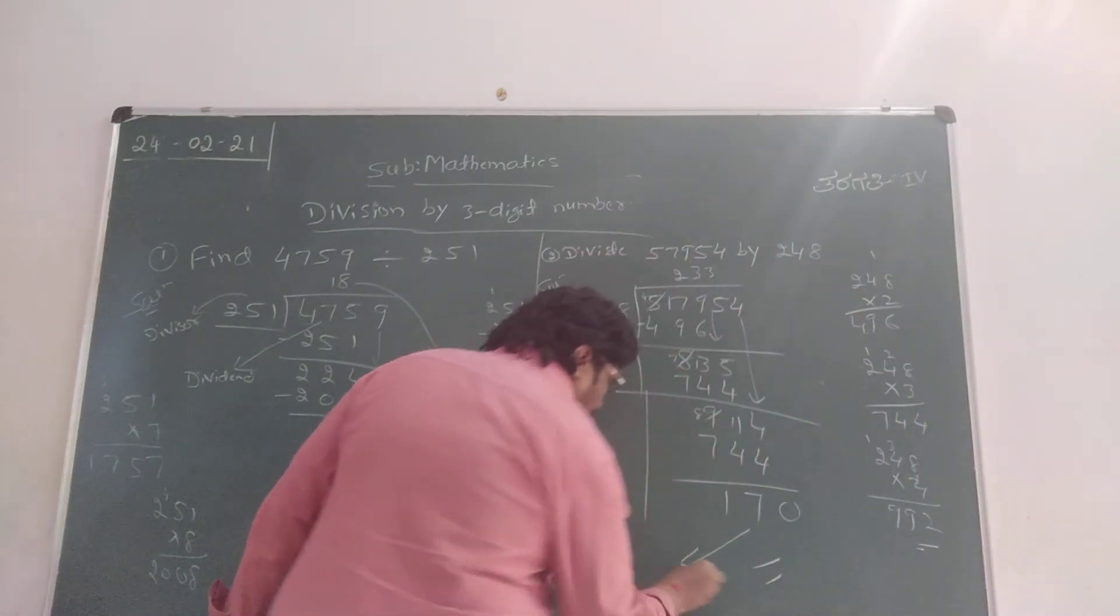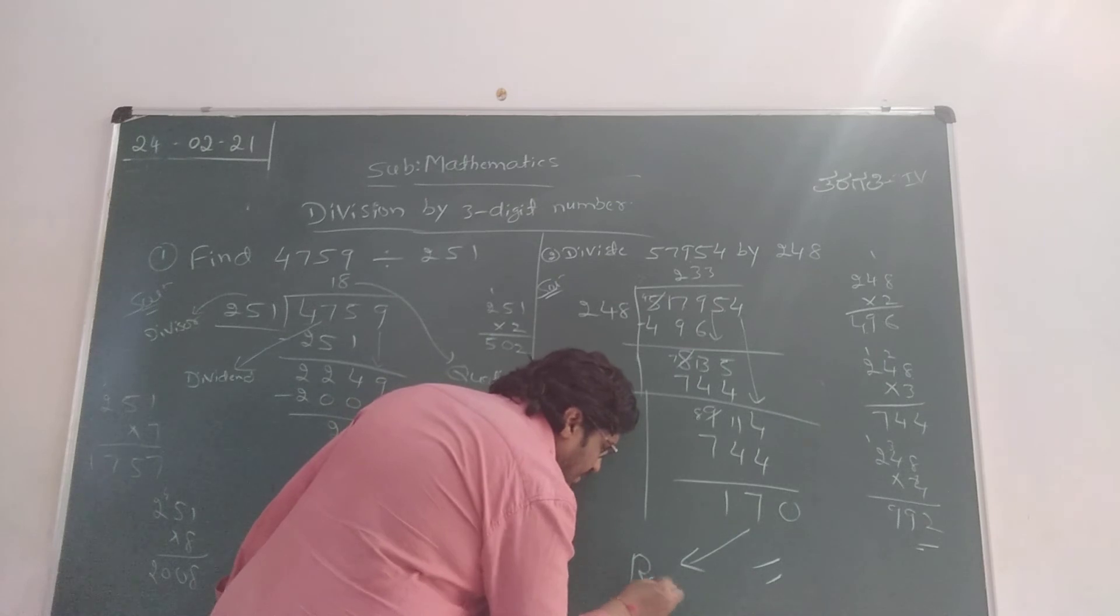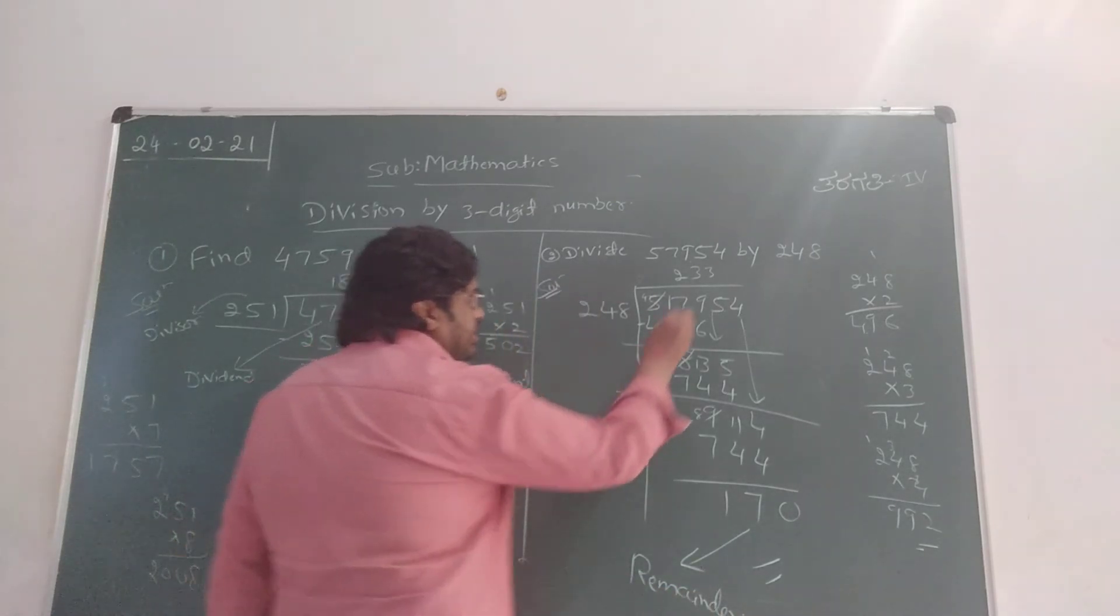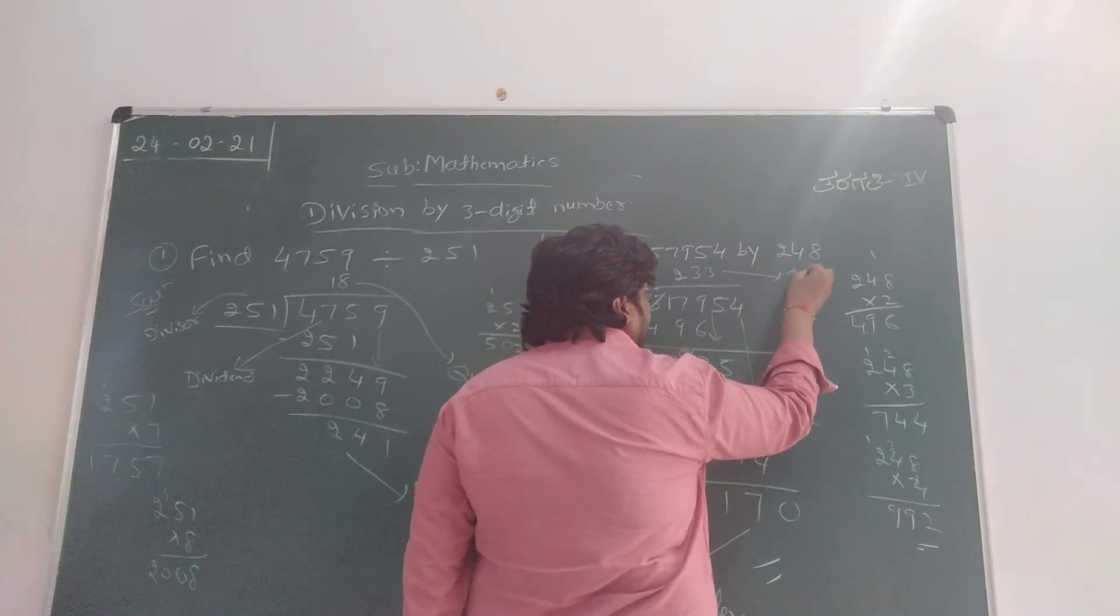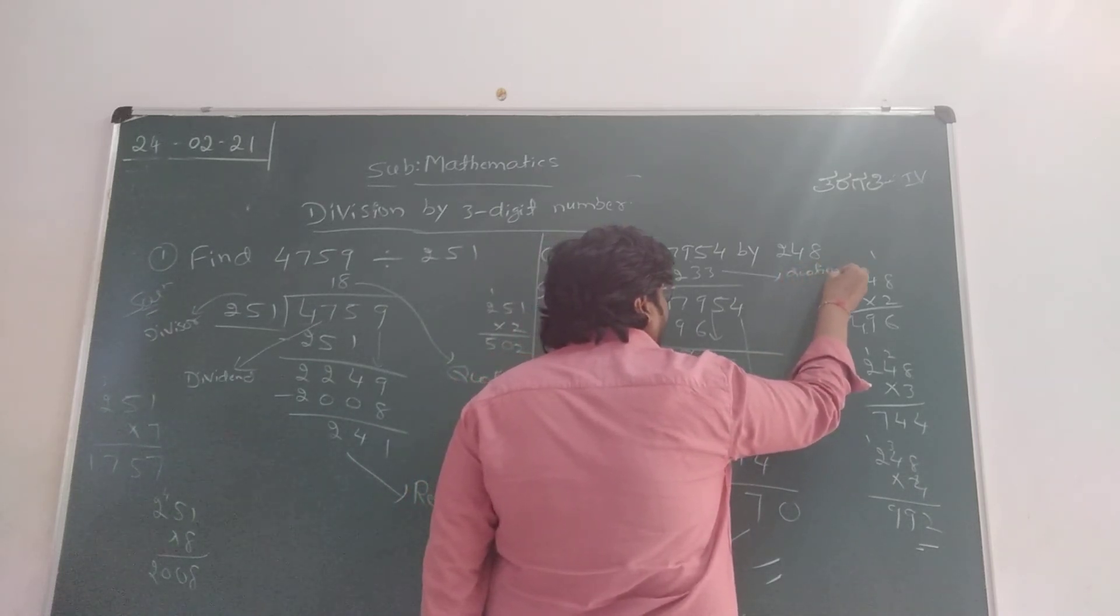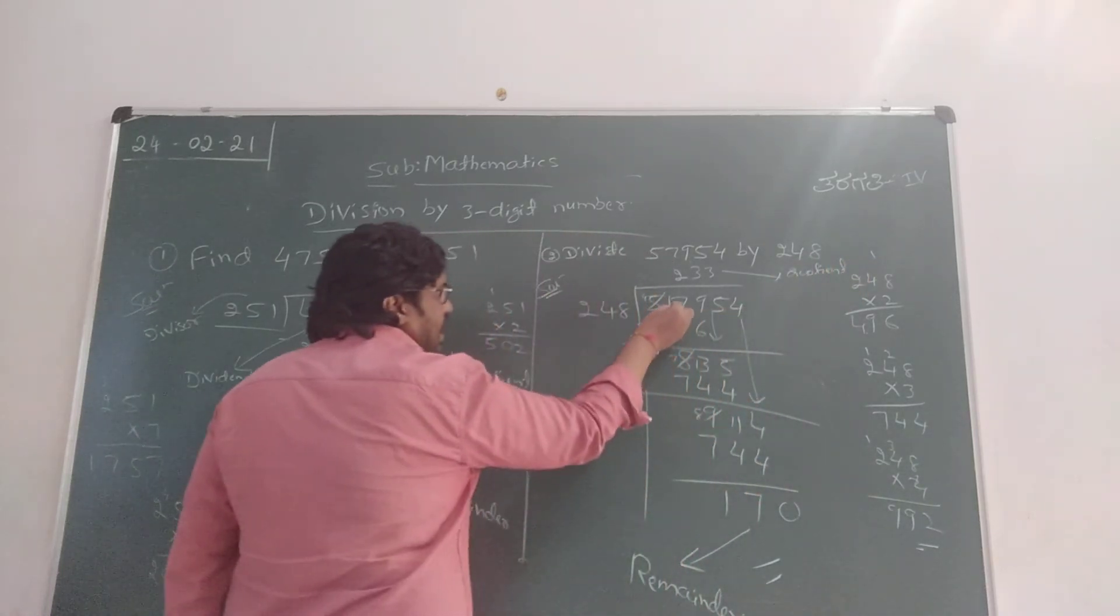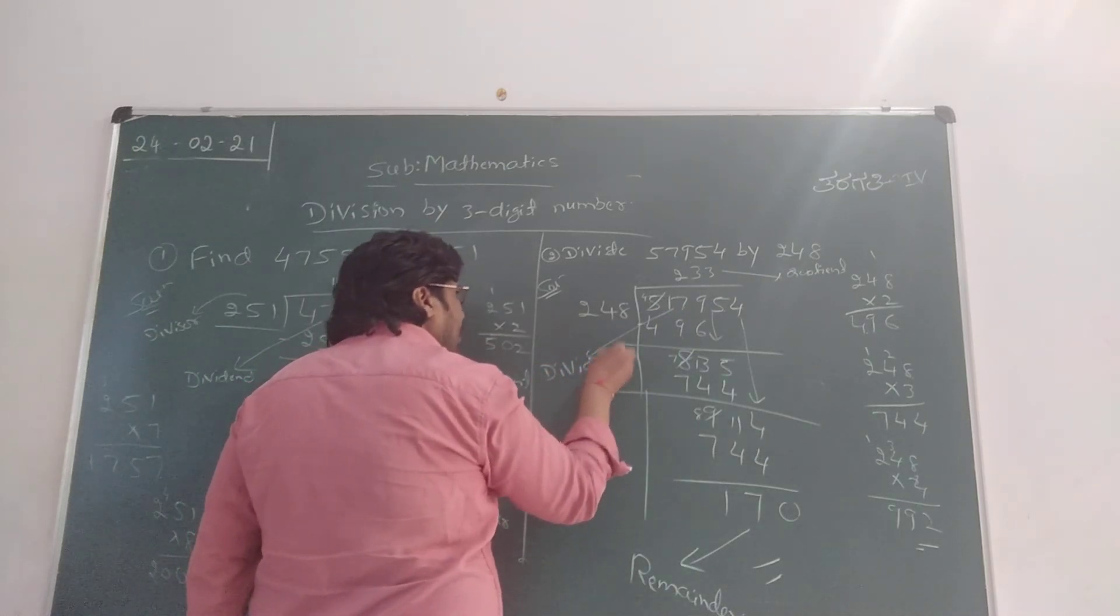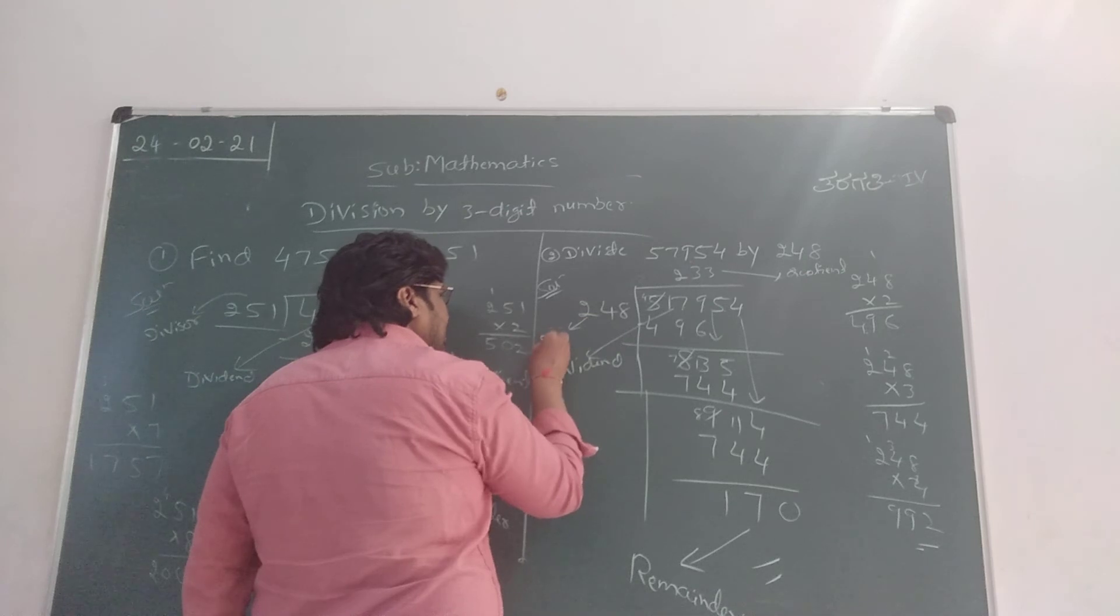What is the remainder children? 170 is our remainder. And what is the quotient? 233 is our quotient. And this is our dividend, and 248 is our divisor.